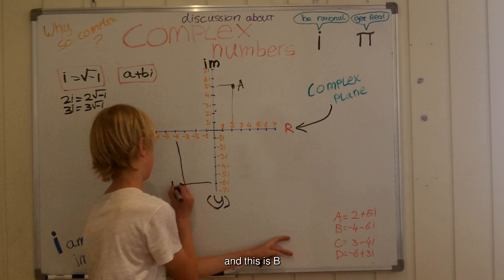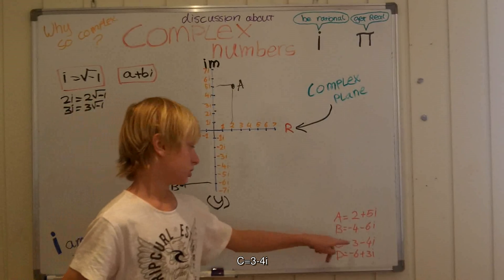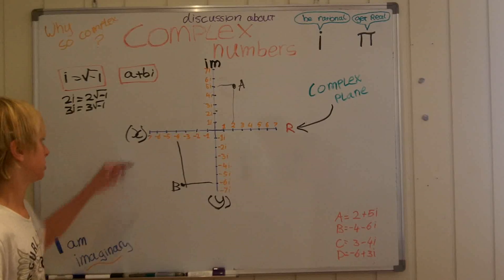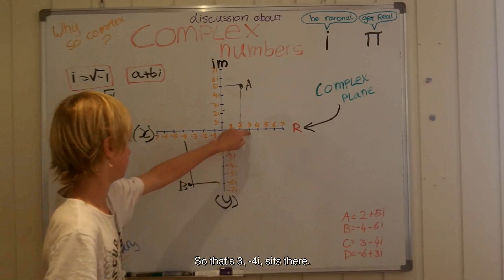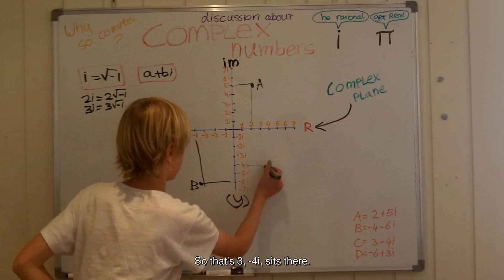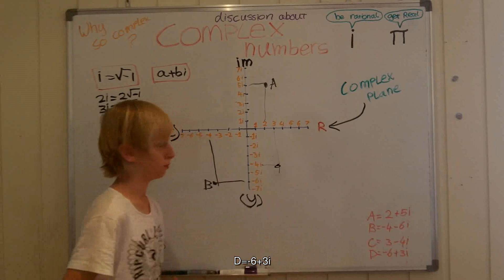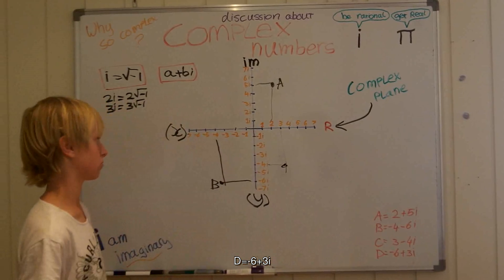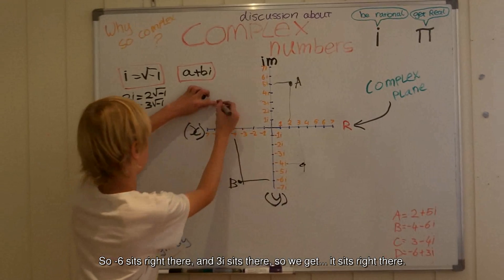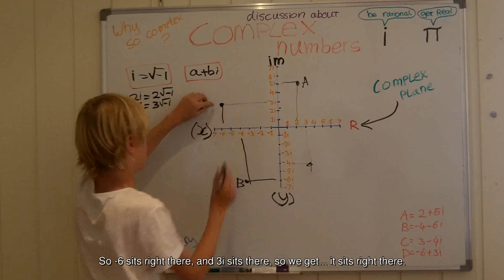Point C is 3 minus 4i, so that's 3 on the real axis and minus 4i on the imaginary axis — it sits there. Point D is minus 6 plus 3i: minus 6 is right there, and 3i is right there, so it sits right there.